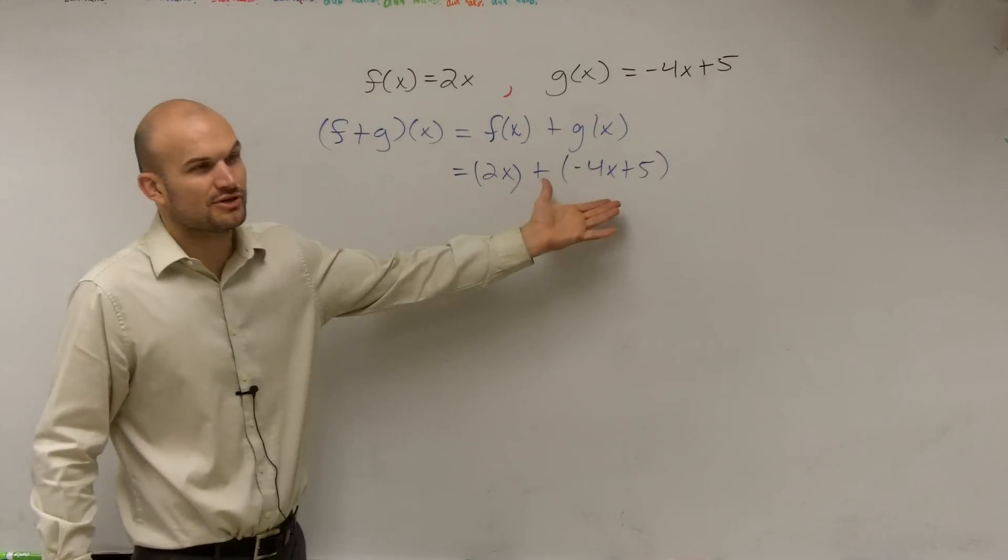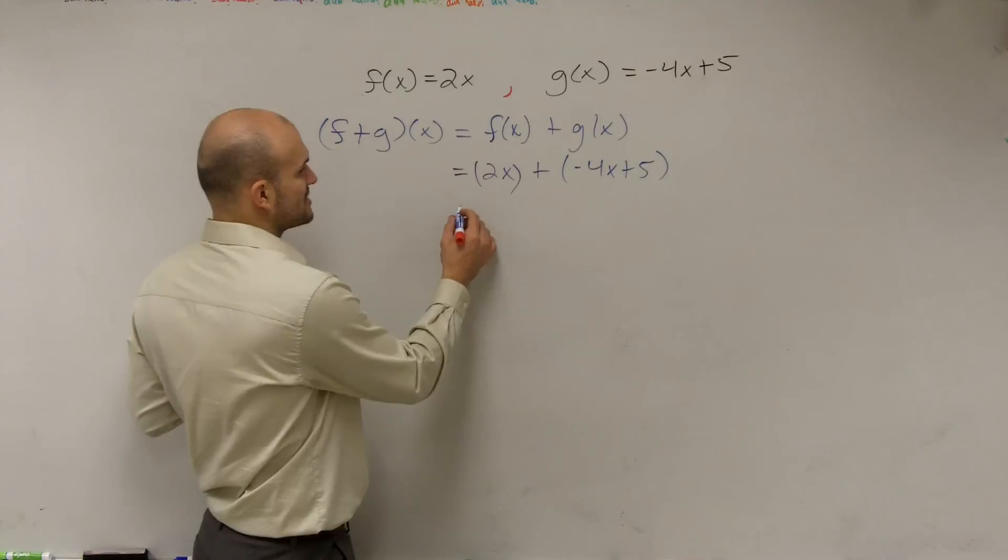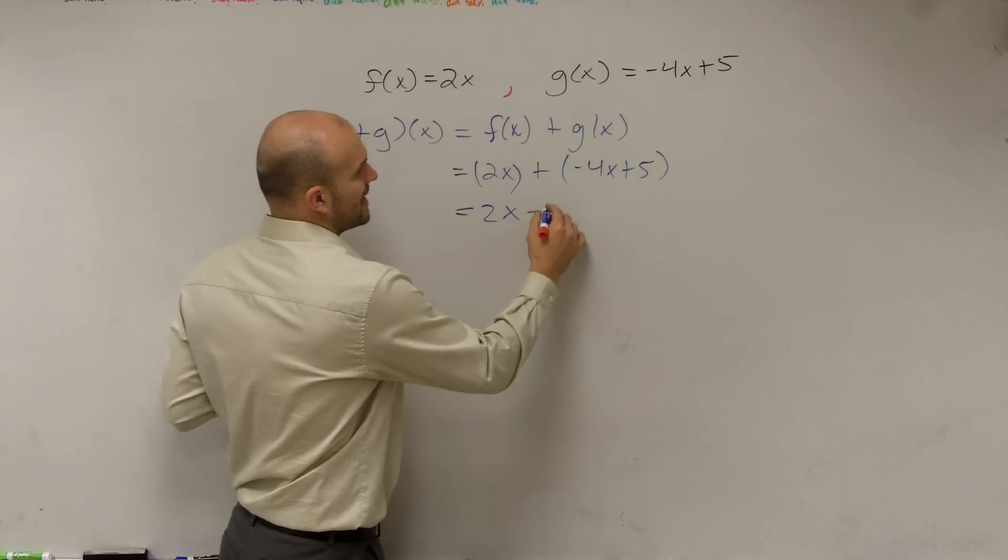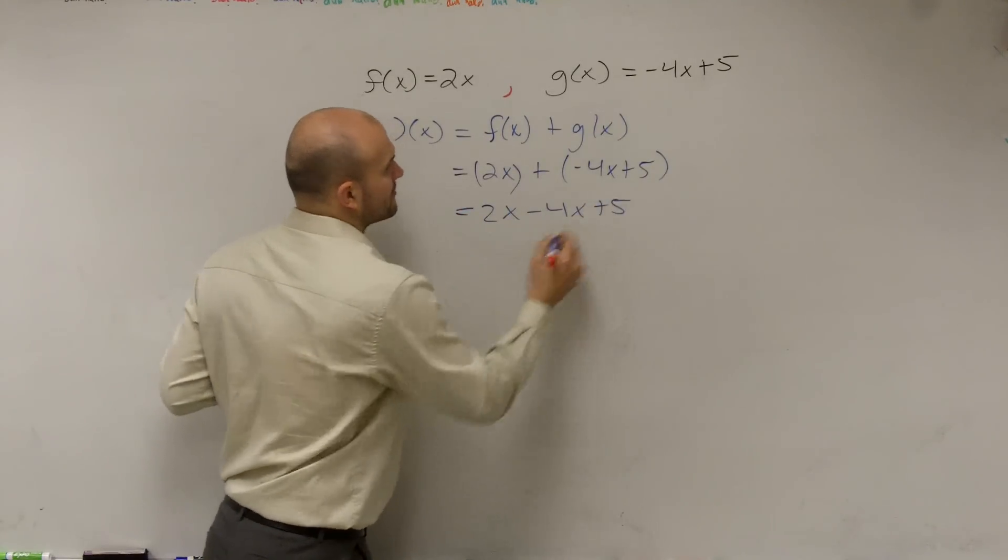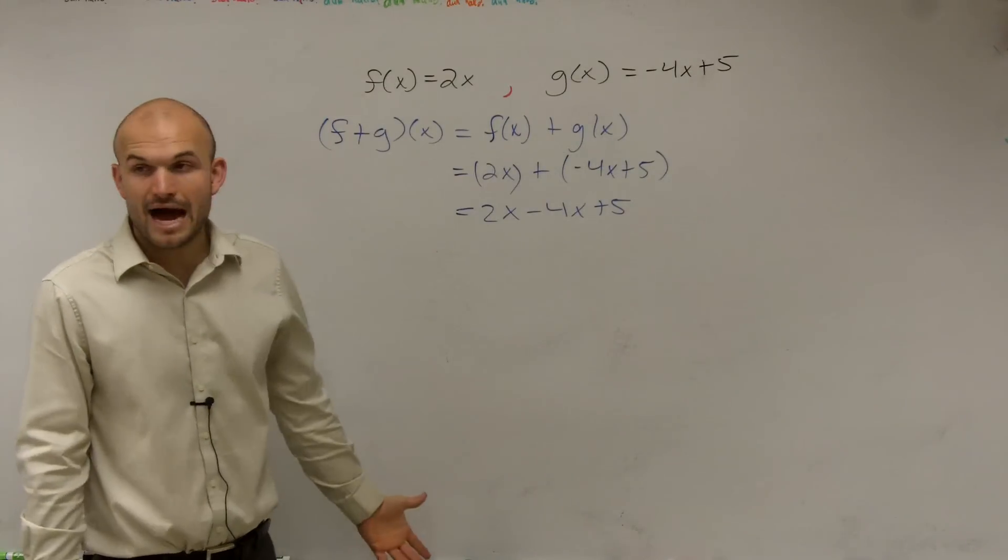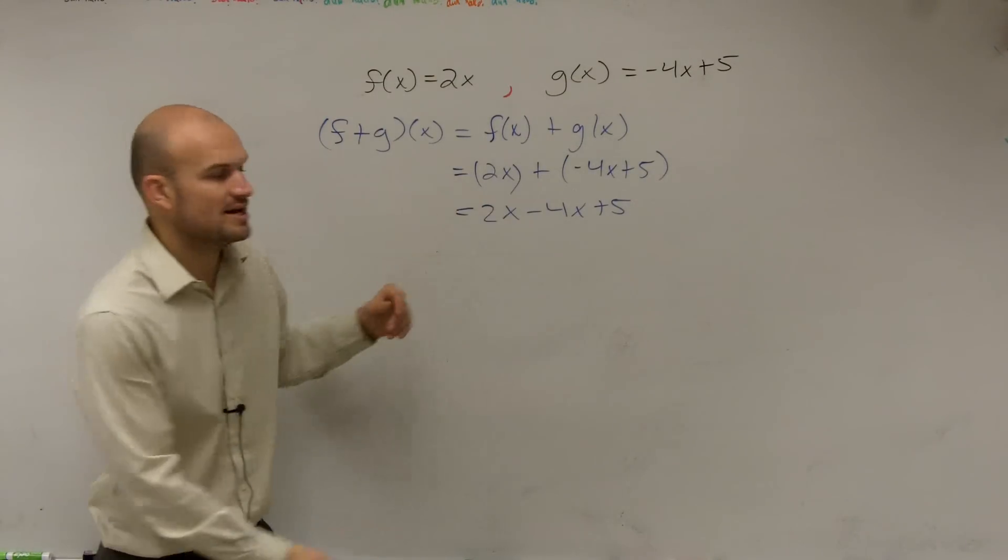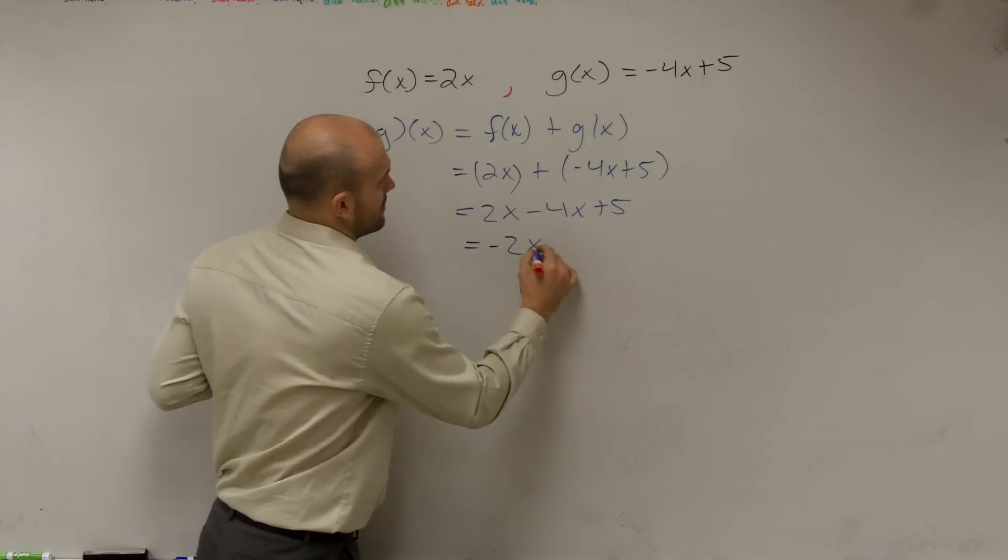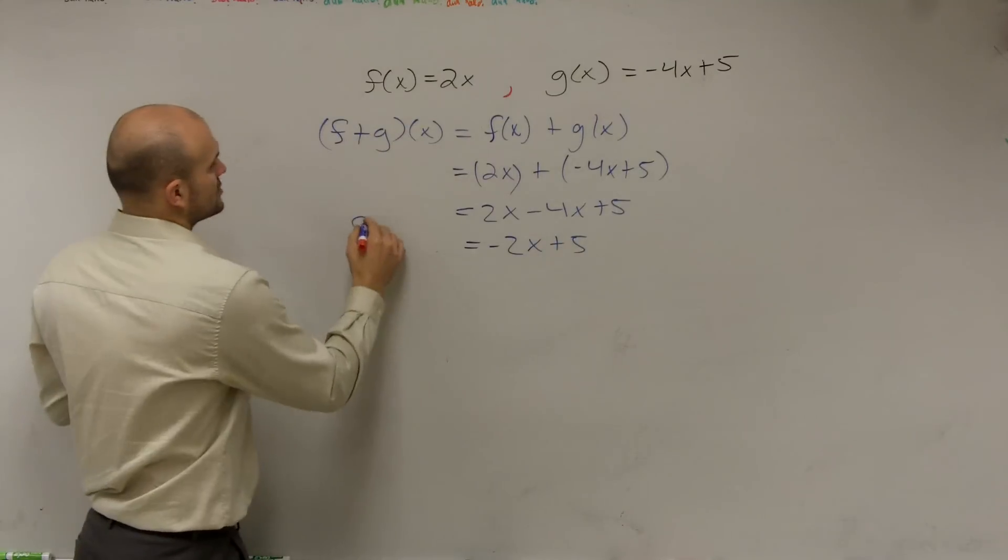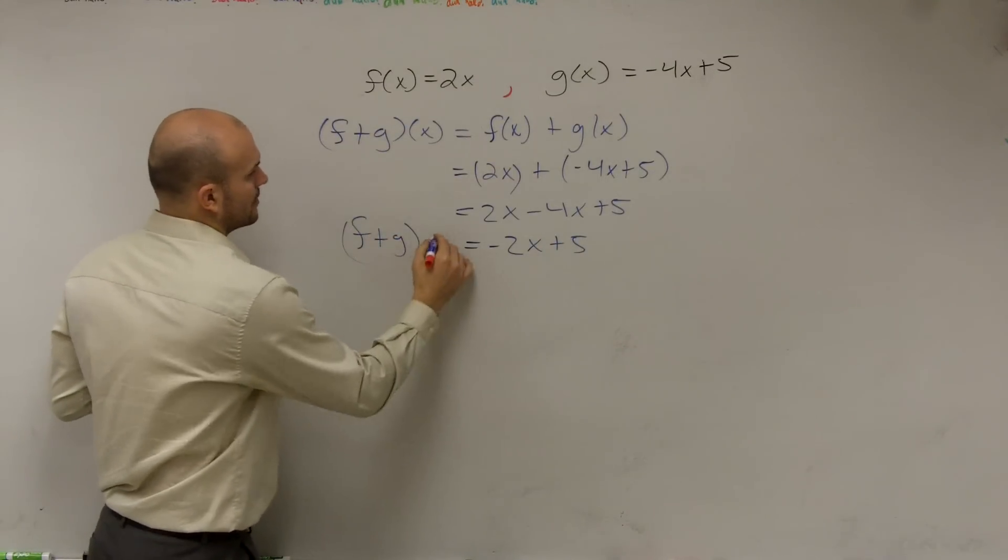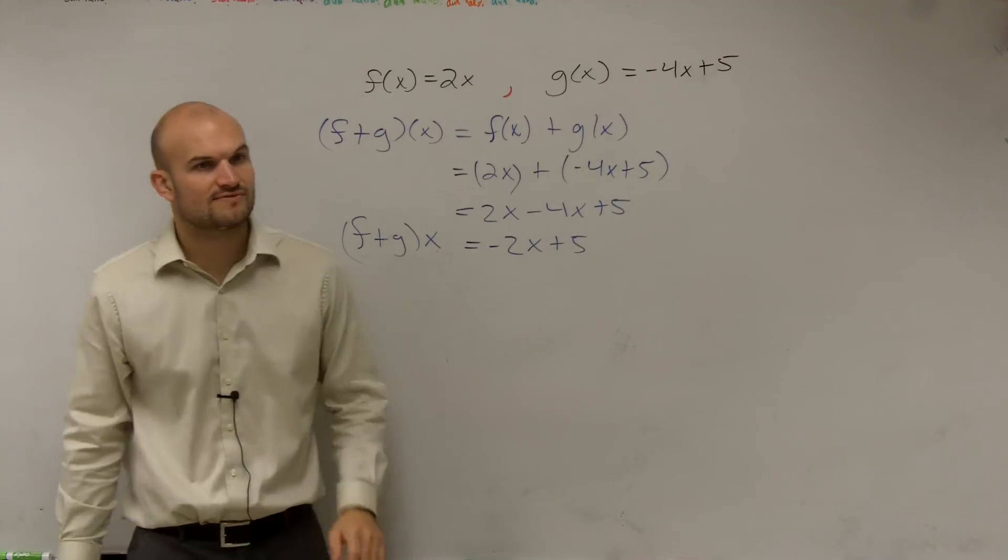Now, since we're doing addition, we can get rid of the parentheses and say 2x minus 4x plus 5. Plus a negative is the same thing as subtracting. Now we combine our like terms: 2x minus 4x plus 5. So f plus g of x equals negative 2x plus 5.